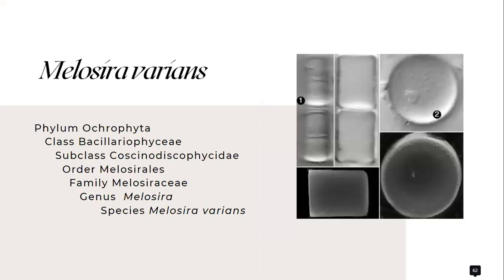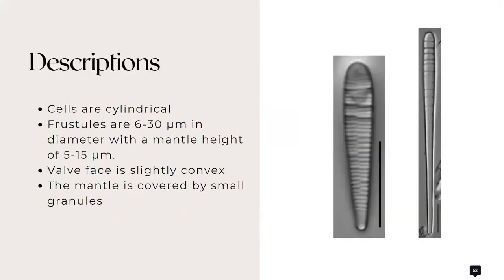Now let's move on to Melosira varians. It belongs to the family Melosiraceae. And in here, the cells are cylindrical forming chains and the frustules are 6 to 30 micrometers in diameter with a mantle height of 5 to 15 micrometers.